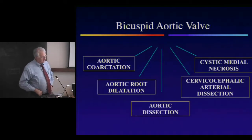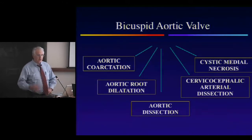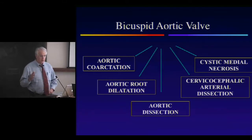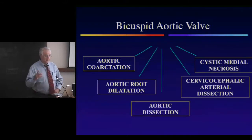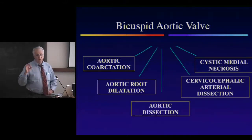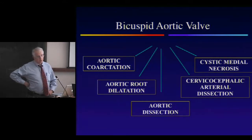Bicuspid valves are associated with aortic coarctation, aortic root dilatation, and dissection. Under the age of 40, the commonest cause of dissection is a bicuspid aortic valve. It's very important — it's the second leading cause in the United States for cardiac surgery, after coronary bypass. So it really is a substantial problem.